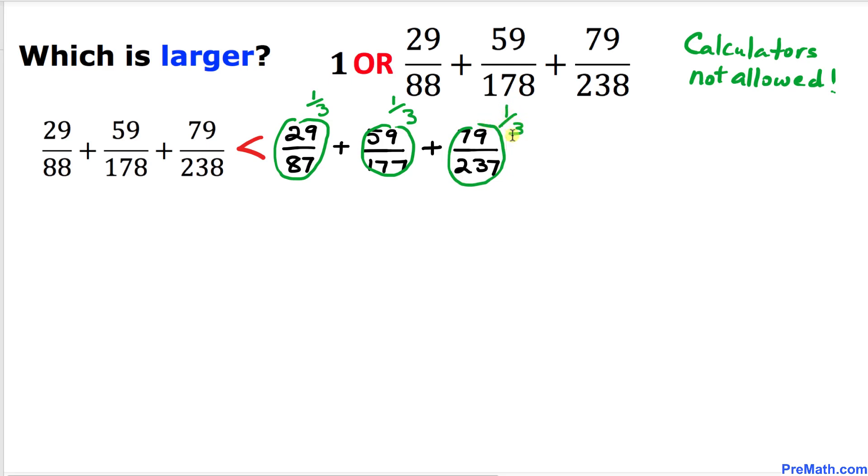Therefore, this turns out to be equal to one over three plus one over three plus one over three. Since the common denominator is three, let's go ahead and put down three.